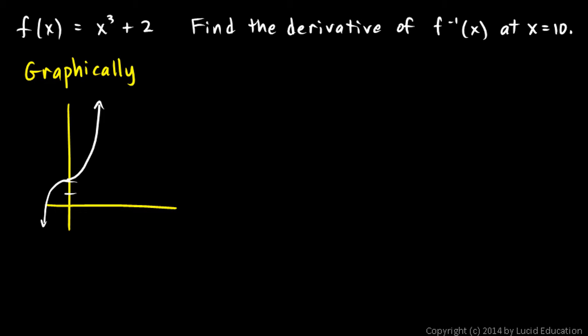So this is x cubed plus 2. We know that it goes through the point 2, 10. So let's mark this. There's a point on there, x equals 2, y equals 10. So that's that point right there, 2, 10. See, 2 cubed plus 2 is 10.